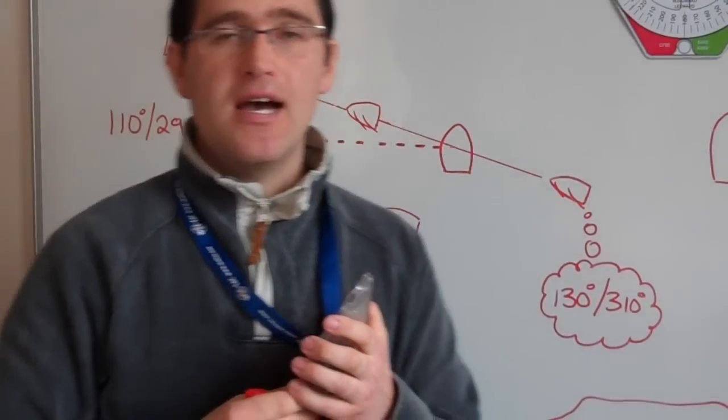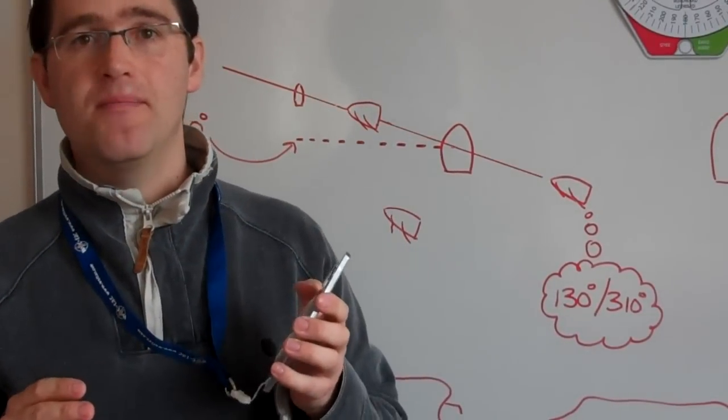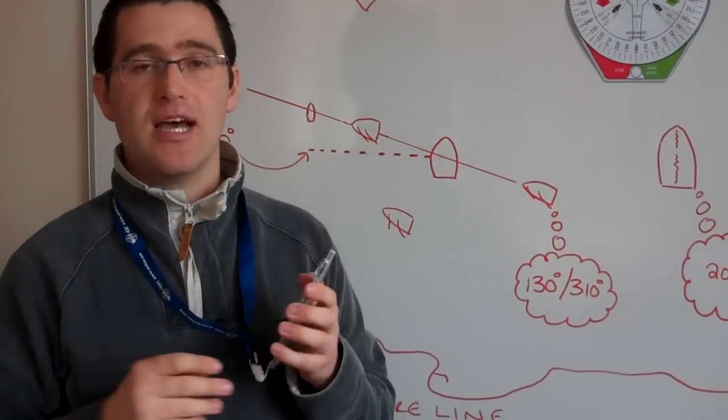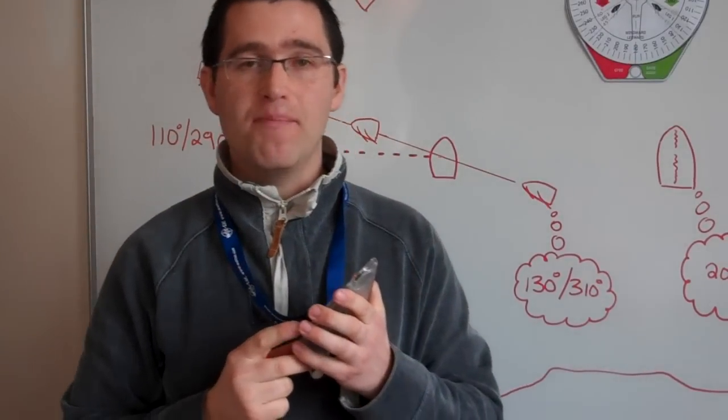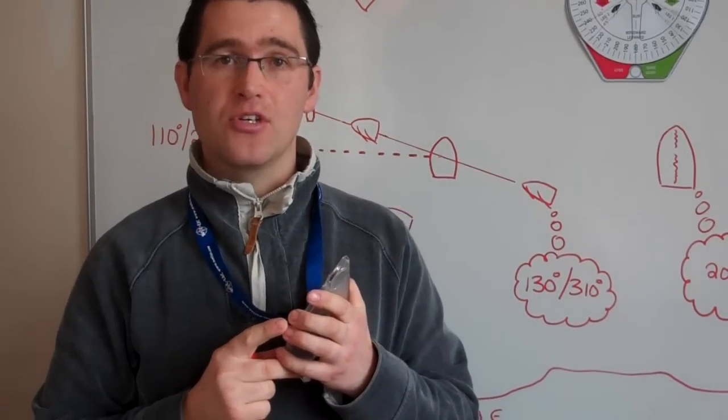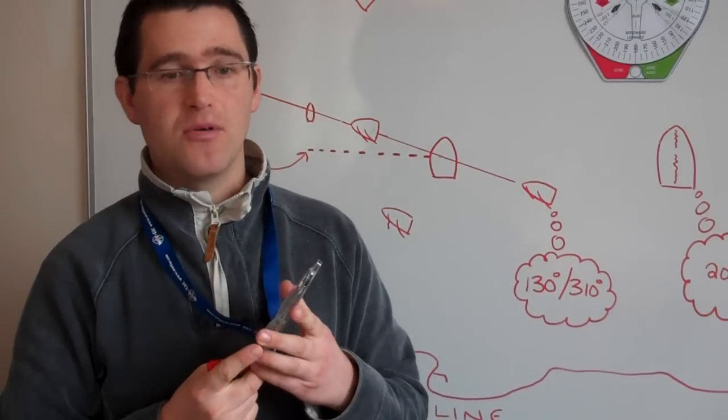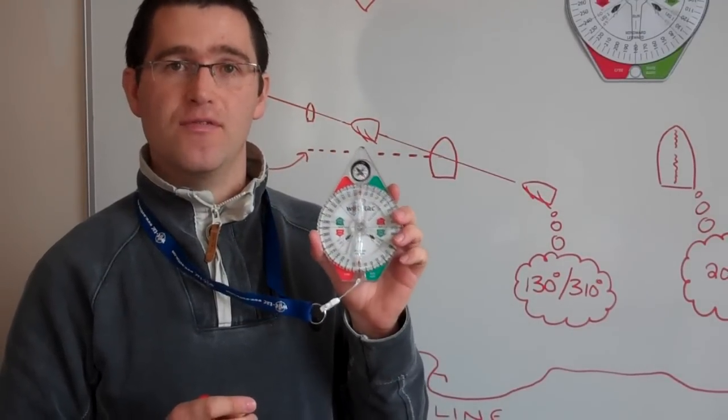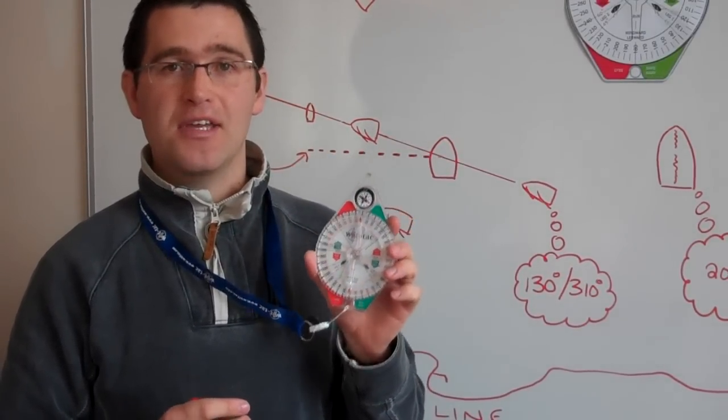Now that we've established the bias of the line, please see our three other videos. One on Olympic and trapezoid courses, one on windward-leeward courses, and the other on sail combinations for keel boats, using the Wattac for each video. Thank you for watching.